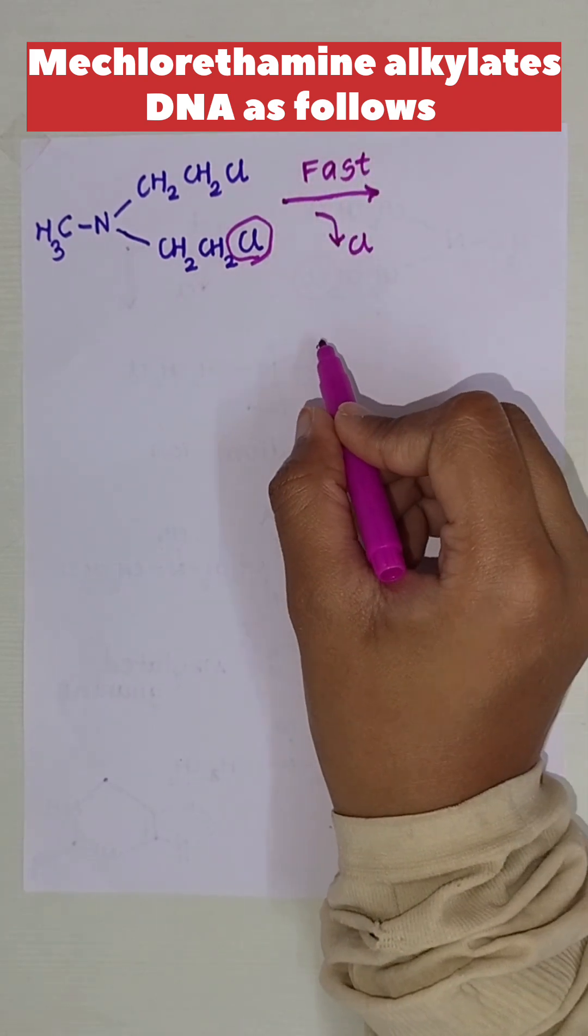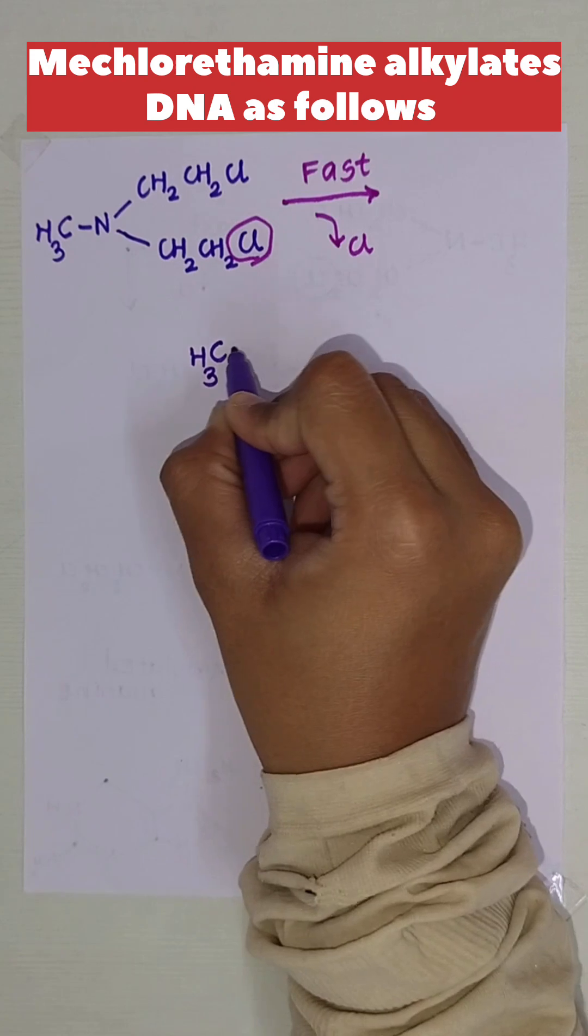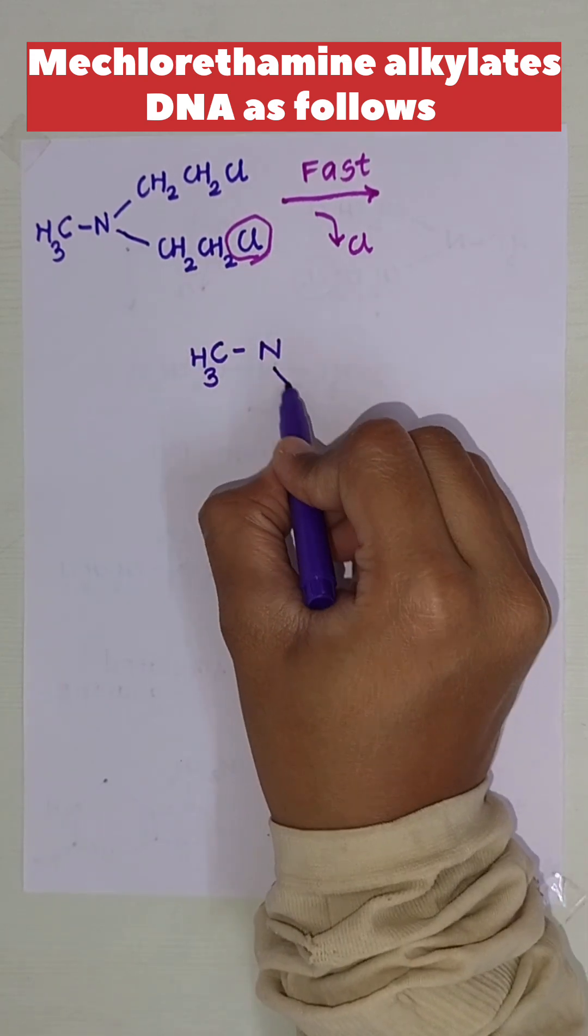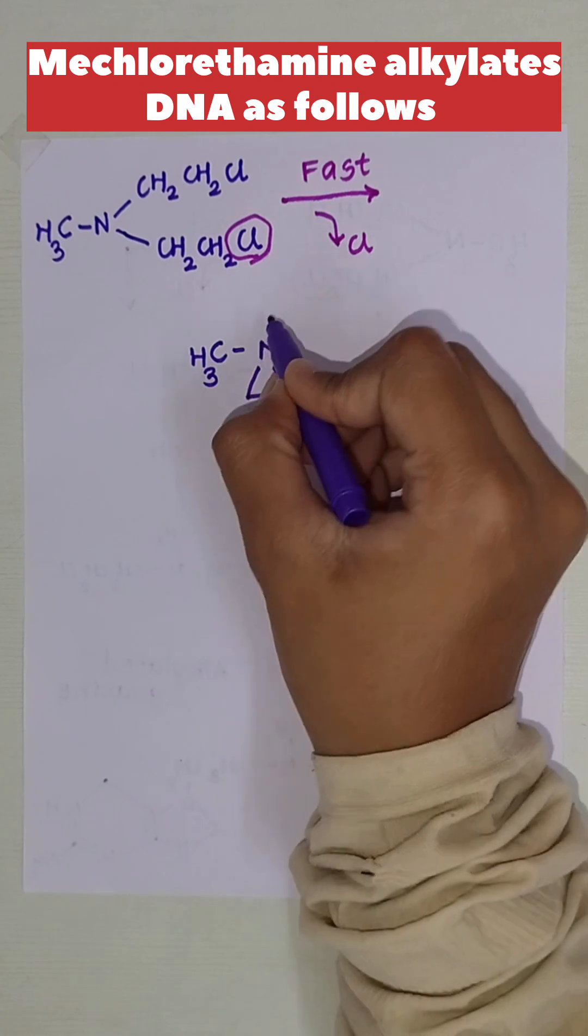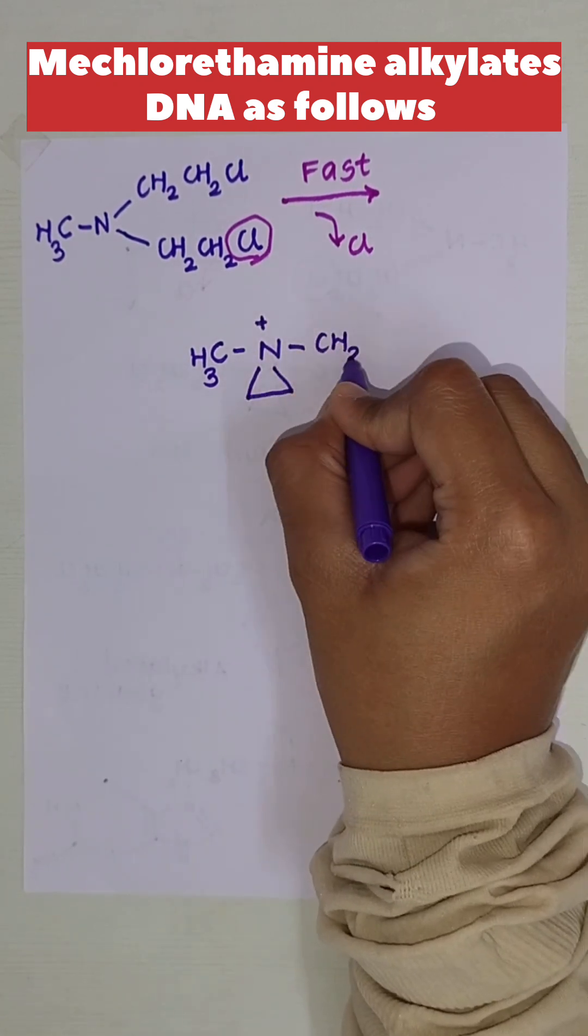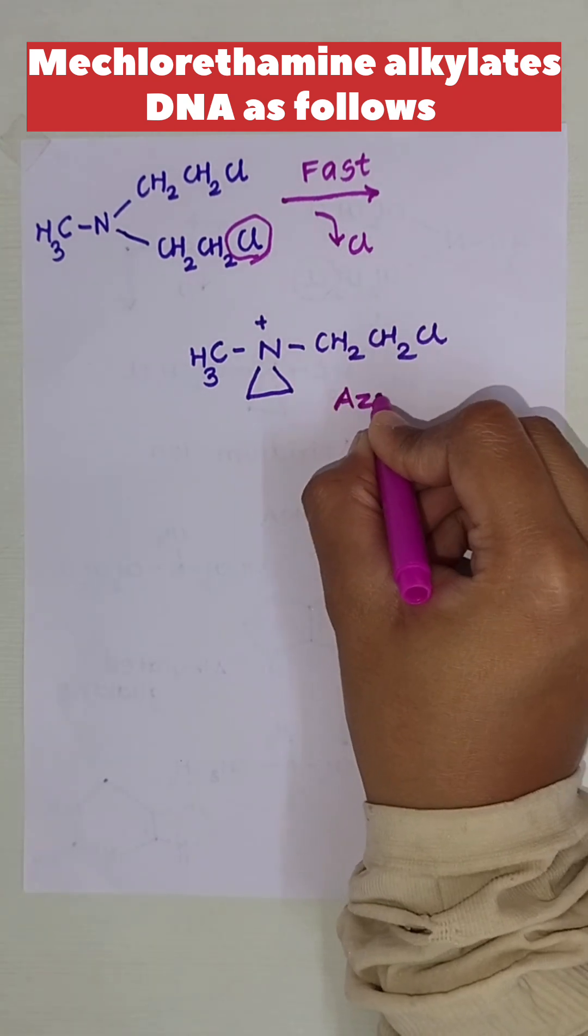An aziridium ion is formed. The structure is CH3N with CH2CH2 forming a ring, with a positive charge on the nitrogen and CH2CH2Cl attached to it.